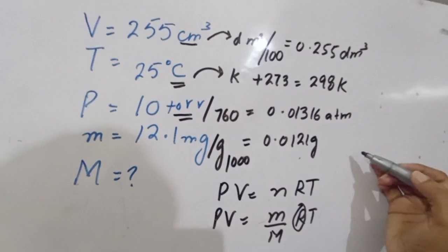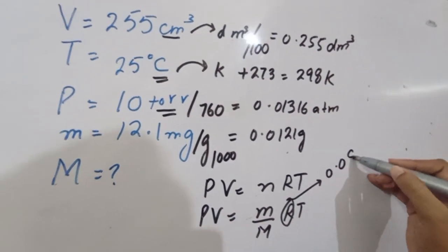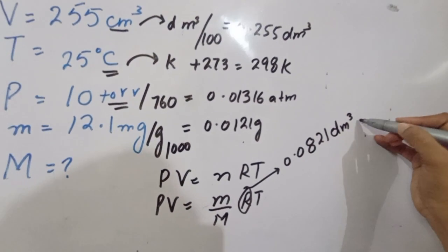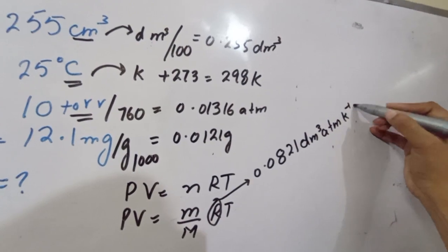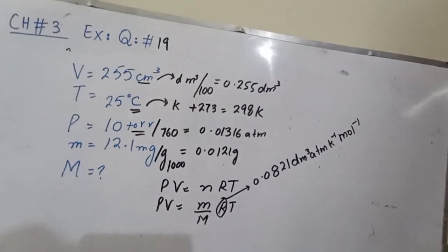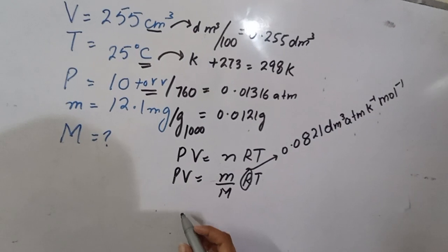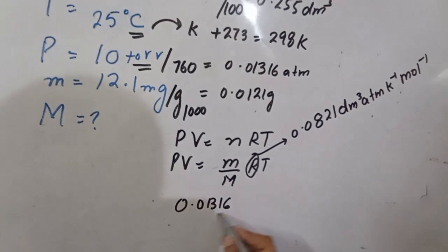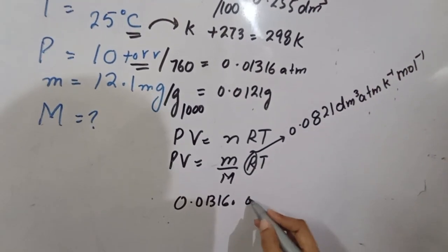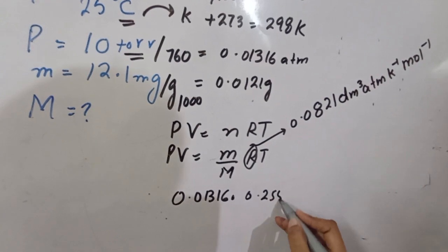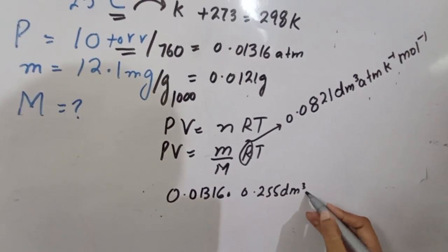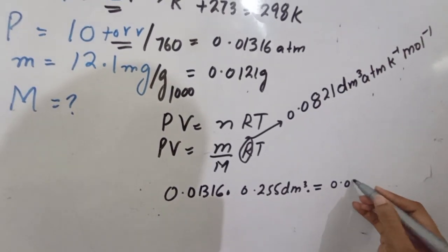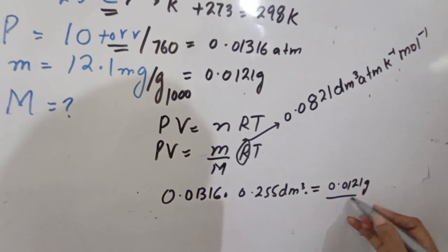Which R value to use? At standard conditions, R is 0.0821 decimeter cube atm per Kelvin per mol. Mass is 0.0121 gram. We need to find molar mass.